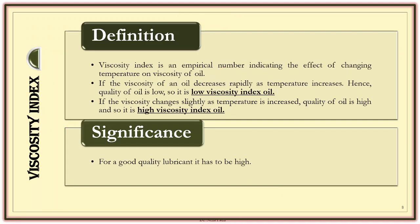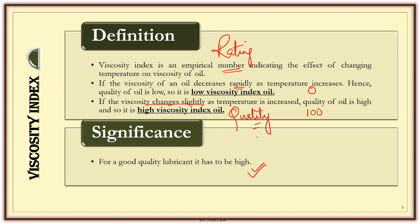Coming to viscosity index — it is an empirical number, basically a rating given to the oil to see the effect of temperature on viscosity. If the oil is high quality, the viscosity changes very slightly with temperature. If it is low quality oil, the variation of viscosity with temperature would be high. Based on that, a rating from 0 to 100 is given. Near 0 means low quality oil, meaning viscosity decreases rapidly when temperature increases. For a good lubricant, the viscosity index number should be high because the quality should be high.